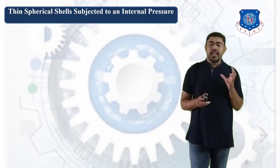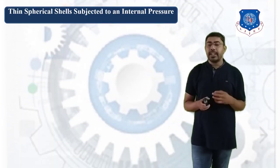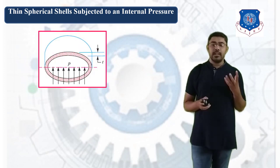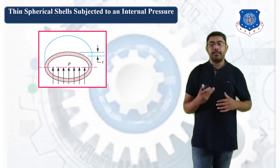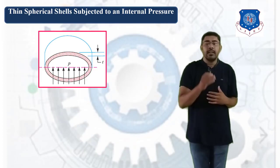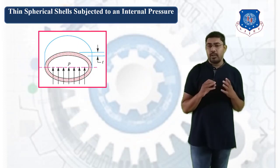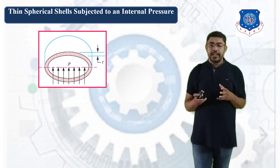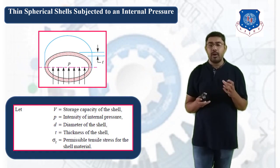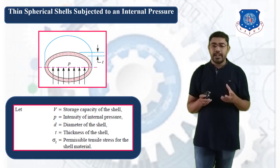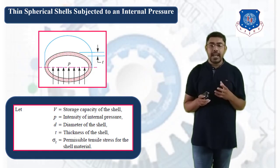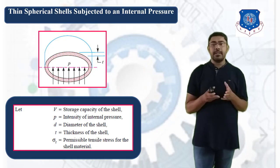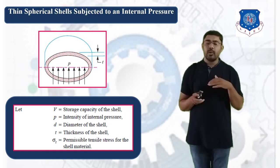Now, consider the spherical cells subjected to internal pressure P. The intensity of pressure P is applied on these spherical cells and T is the thickness of the sphere. Let V be the volume capacity of this cell, P is the intensity of internal pressure, D is the diameter of cell, T is the thickness of cell, and sigma T is the permissible tensile stress for the given cell material.